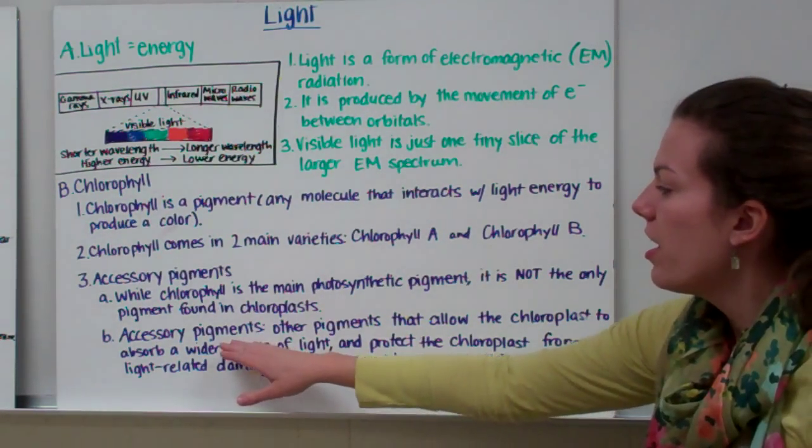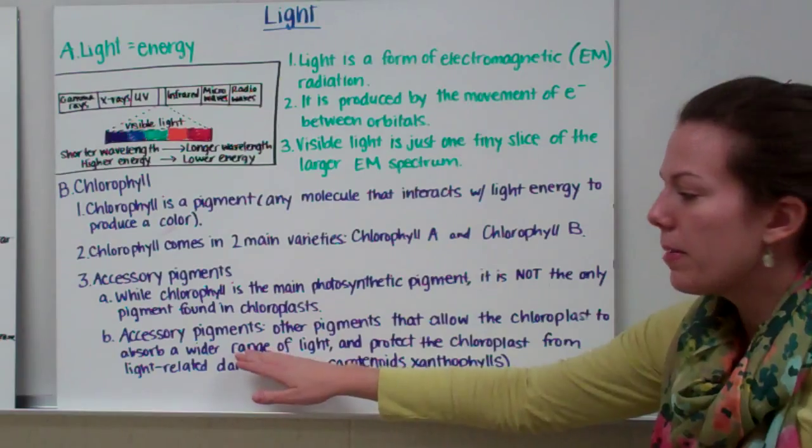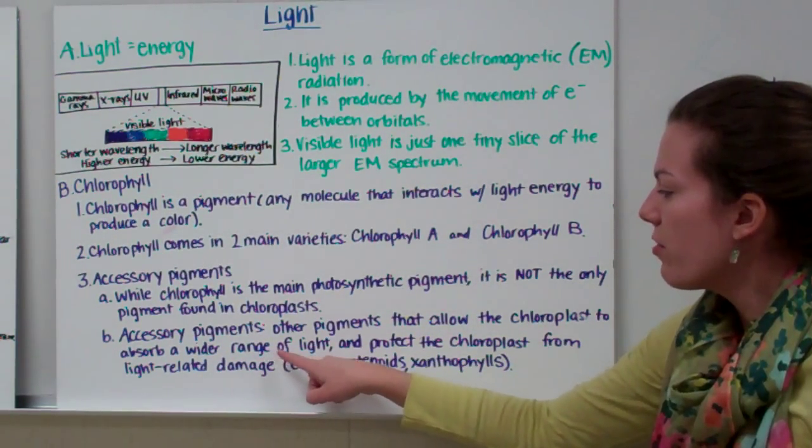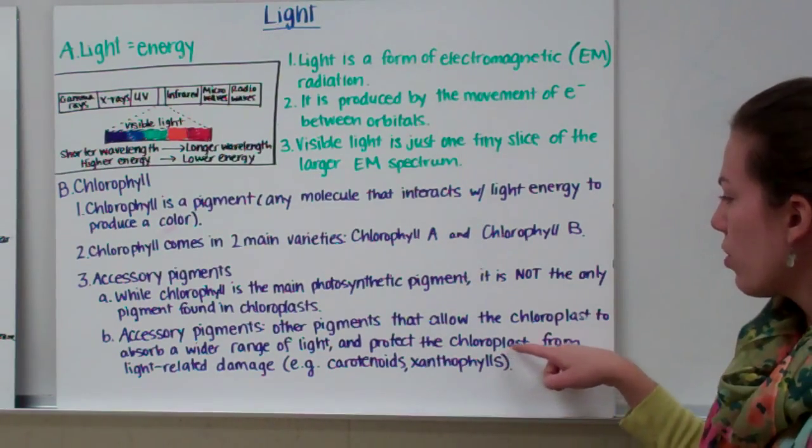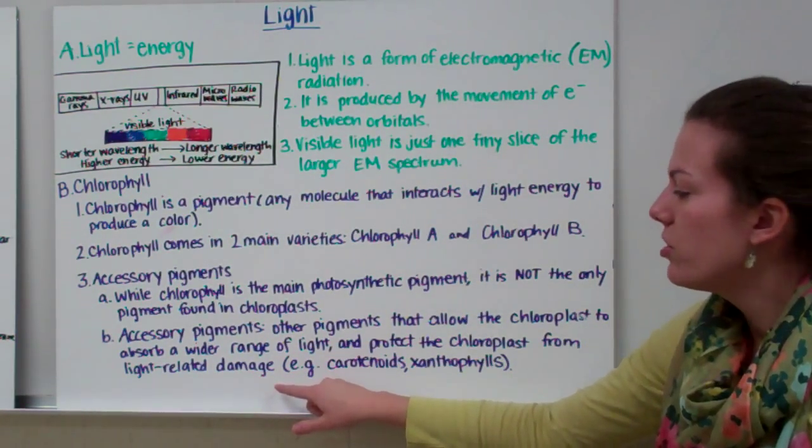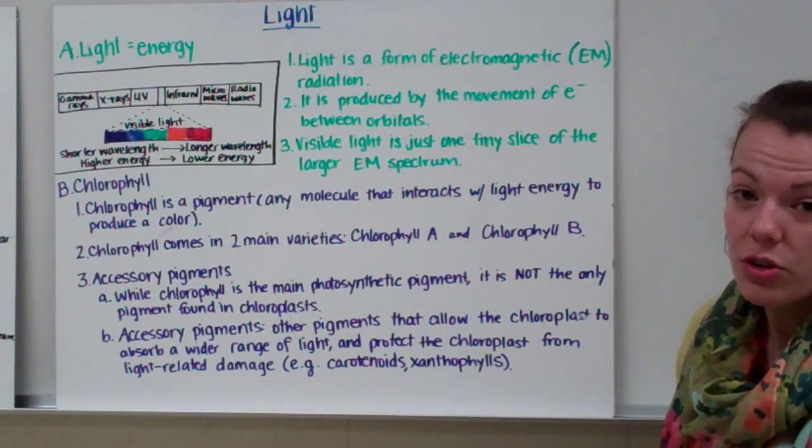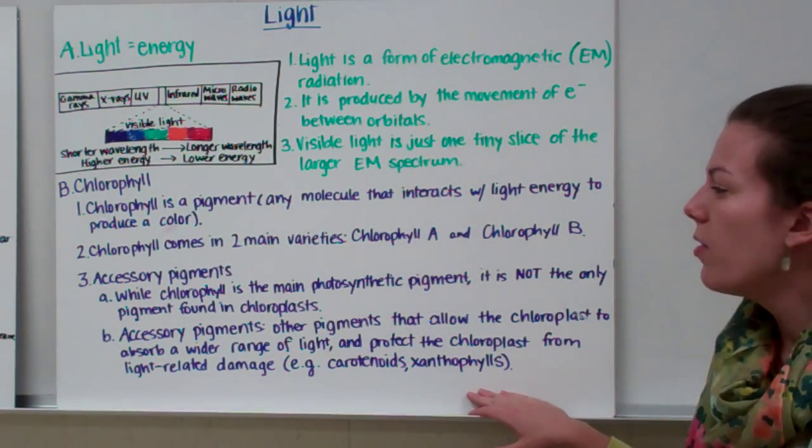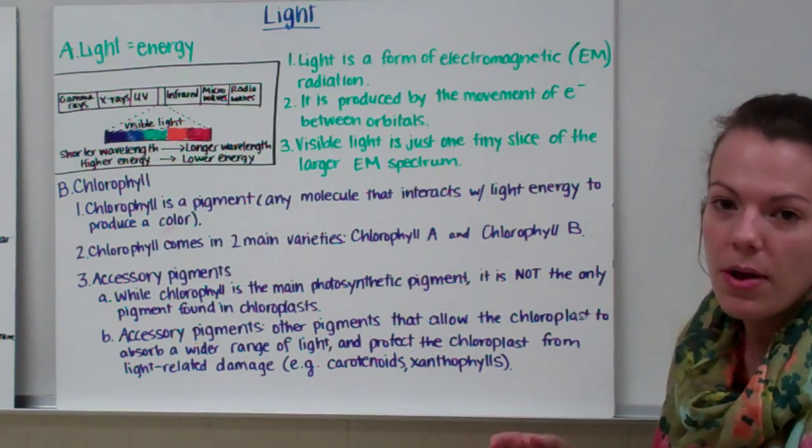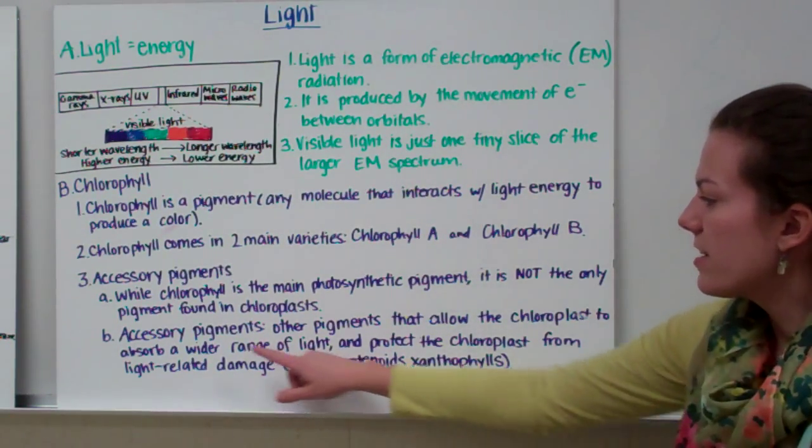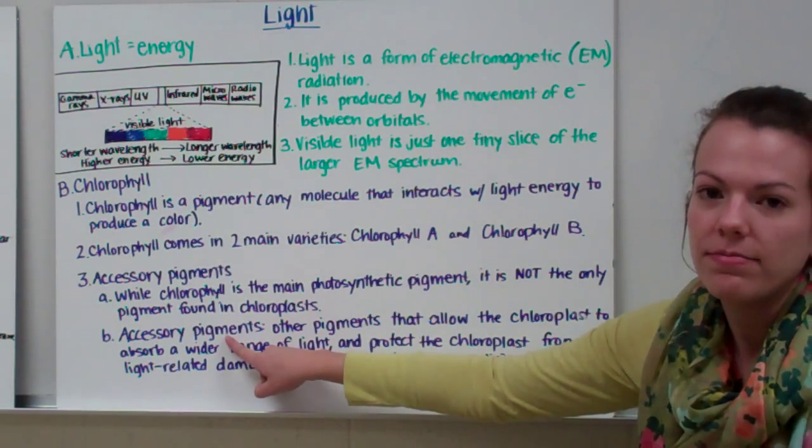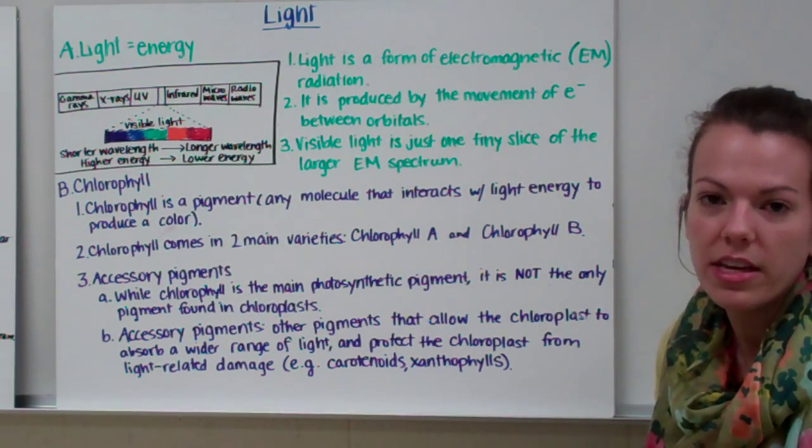Our other pigments are called accessory pigments. Accessory pigments are other pigments that allow the chloroplast to absorb a wider range of light and protect the chloroplast from light-related damage. Some examples of those accessory pigments are carotenoids and xanthophylls. So chlorophyll absorbs some wavelengths of light but not others, and these accessory pigments help the chloroplast to absorb other wavelengths of light. So it's just a little bit more efficient with those accessory pigments.